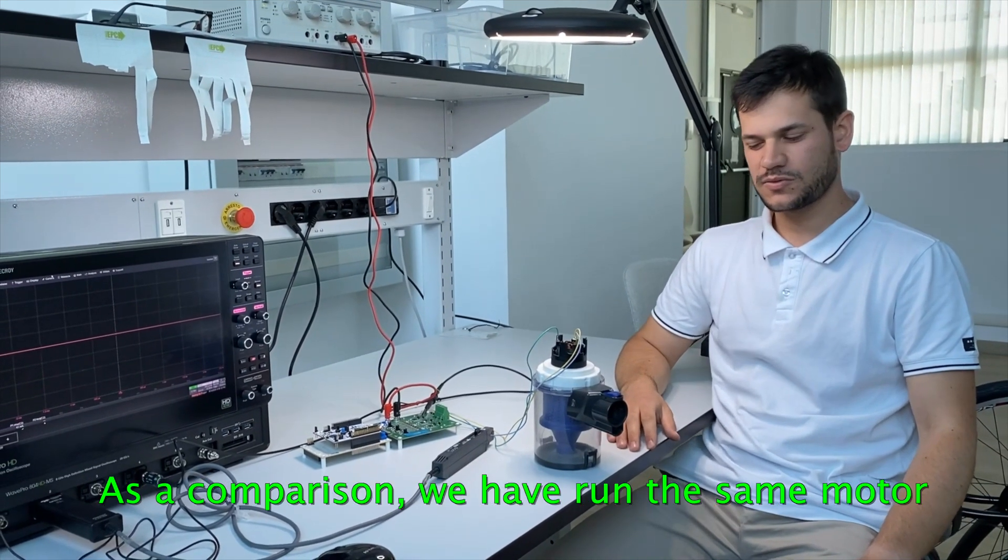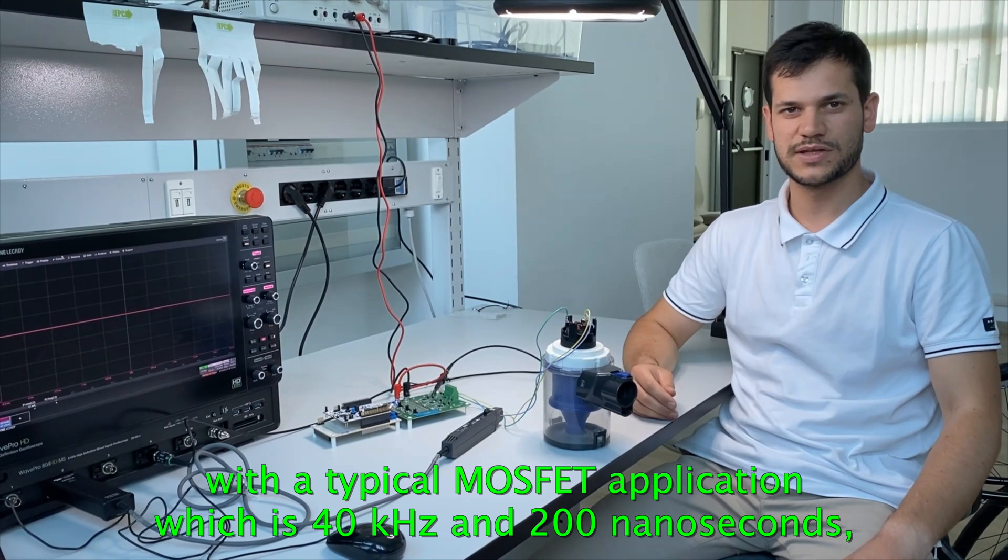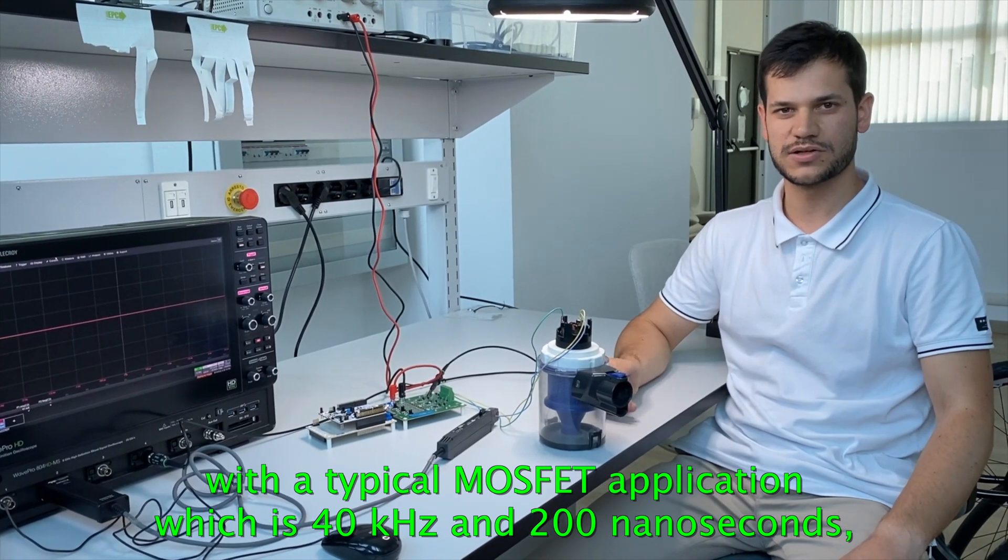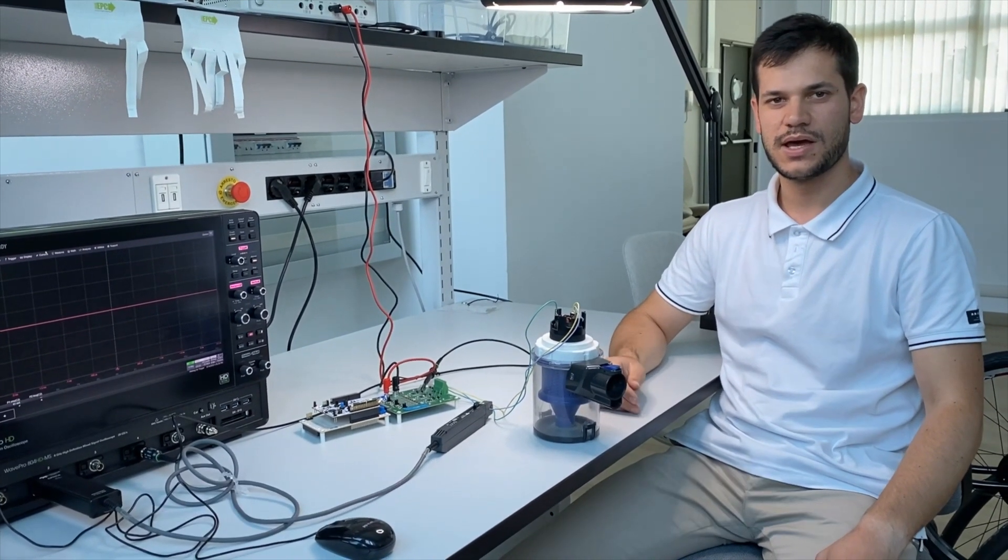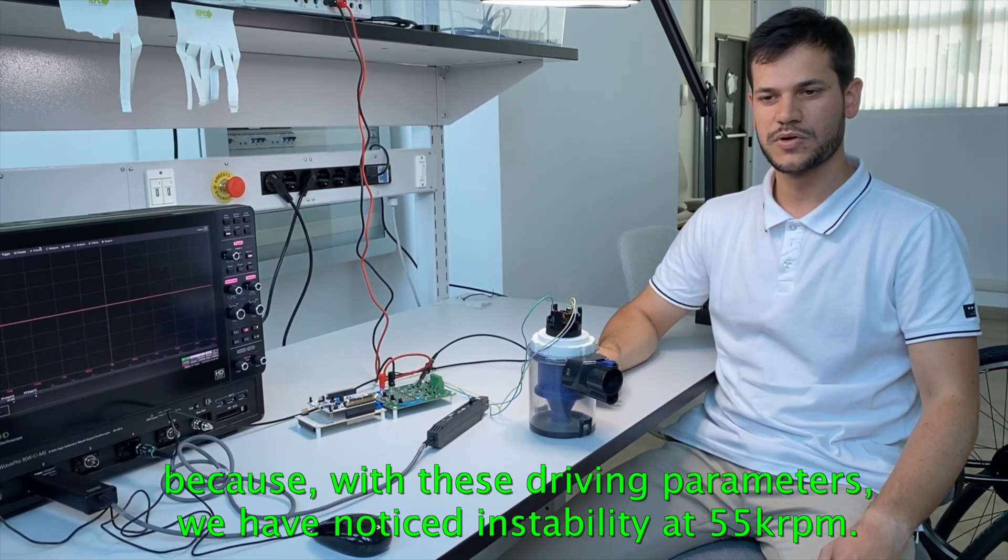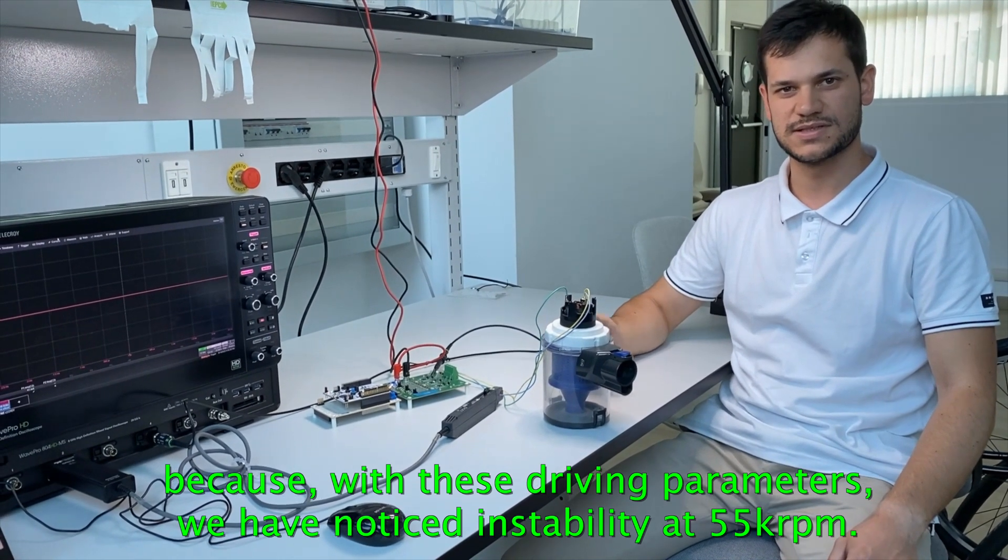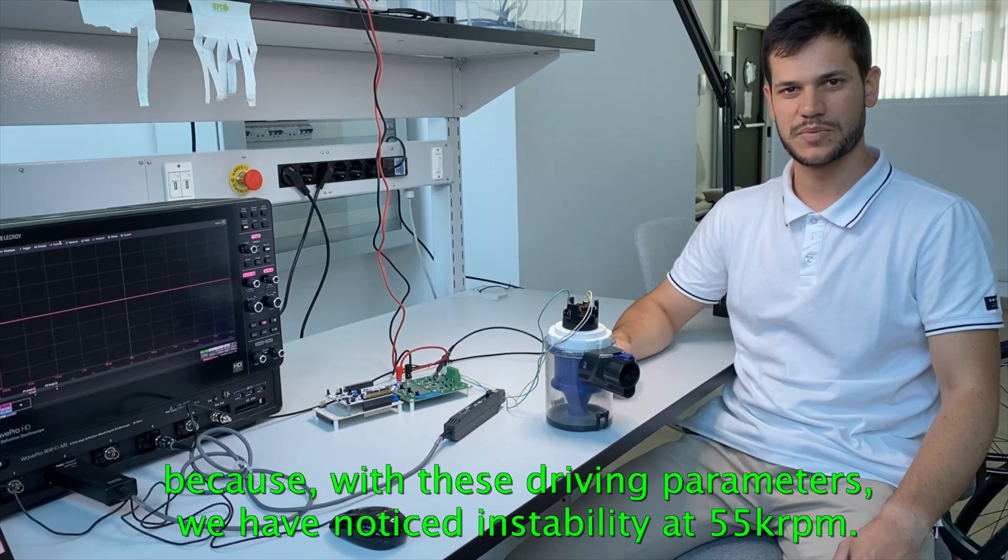As a comparison, we've run the same motor with a typical MOSFET application, which is 40 kHz and 200 ns. And we've made the motor run at 45 kHz RPM, because with these driving parameters, we've noticed instabilities at 55 kHz RPM.